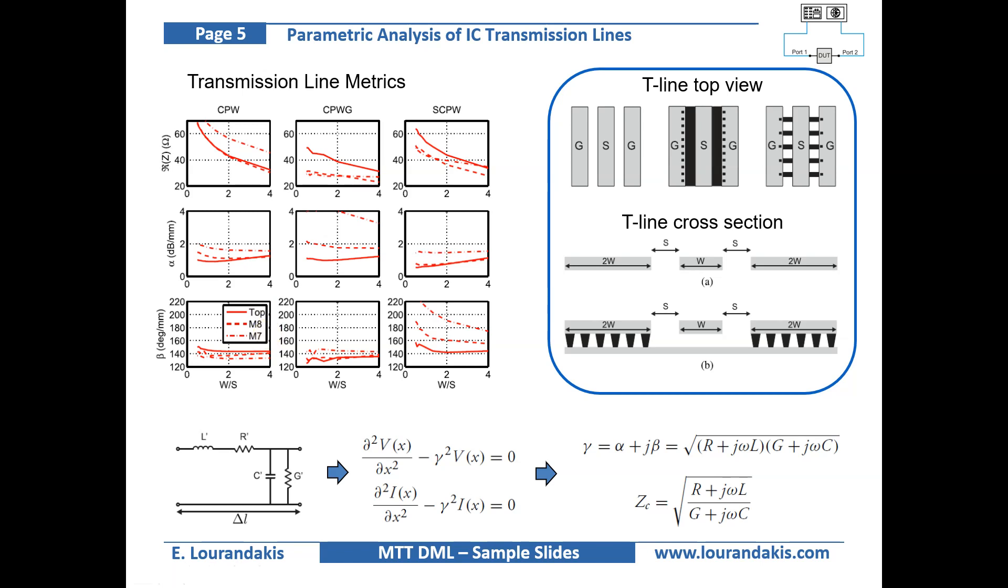This is expected since by changing the metal layer we change not only the electrical properties of the metal but also the height from the lossy silicon substrate.